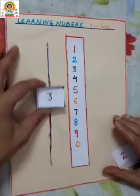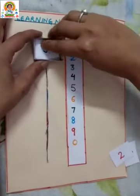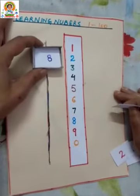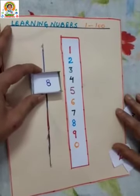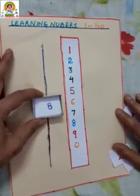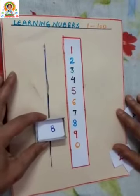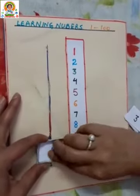Now by repeating this we can count this up till 100. Now let us see it is 81, 82, 83, 84, 85, 86, 87, 88, 89 and 90.